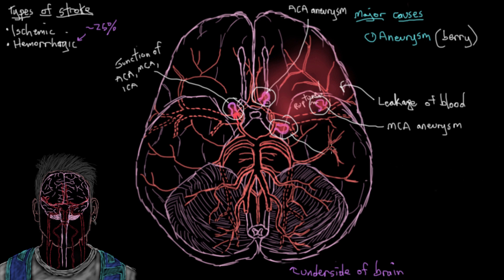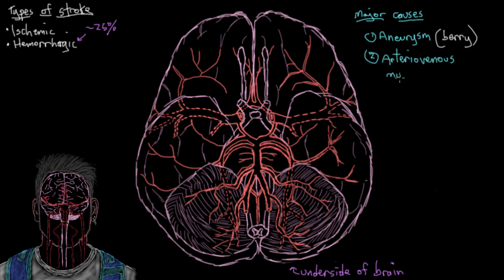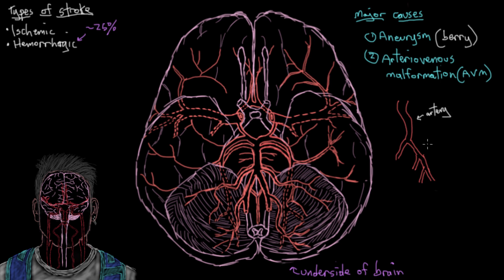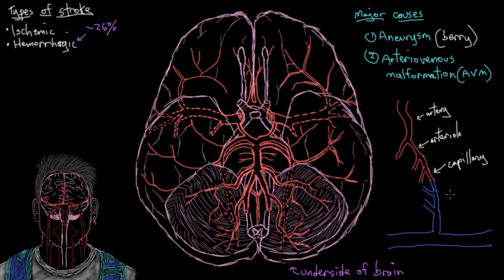The second major cause of hemorrhagic stroke is an arteriovenous malformation, or AVM. In normal circulation, big arteries give off smaller arterioles, which divide into even smaller arterioles, all the way down to the level of the capillary — which is super small and is where gas exchange between blood and body tissues takes place. On the other side, blood drains from the capillary into a venule, then a small vein, then a proper vein, and eventually into a really large vein like the inferior vena cava.